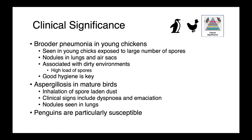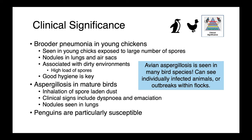In mature birds, we see aspergillosis due to the inhalation of spore-laden dust, with associated respiratory tract signs including dyspnea and potentially emaciation with more chronic infections. Nodules are seen in the lungs. Penguins are particularly susceptible to Aspergillus infections. Aspergillosis is seen in many birds — domestic, wildlife, and exotic species — and the presentation is quite variable, from individually infected animals to large outbreaks in affected flocks.